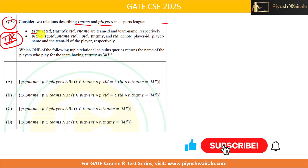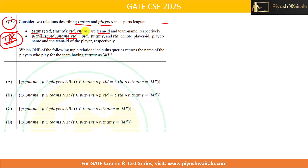We have two relations: Teams having TeamID and TeamName, and Players having PlayerID, PlayerName, and TID. TID and TeamName are the TeamID and TeamName respectively from the Teams table. PID, PNAME, and TID denote the PlayerID, PlayerName, and TeamID of the player respectively. The question asks: which TRC query retrieves the names of players who play for the team with TeamName as 'EMI'?